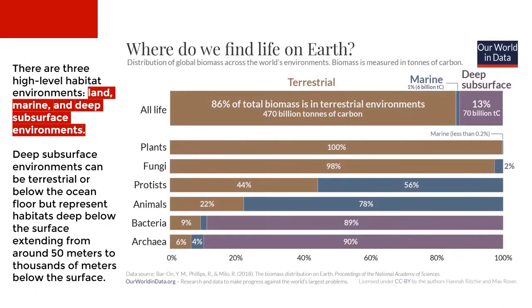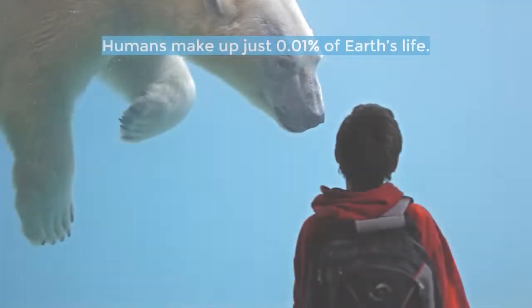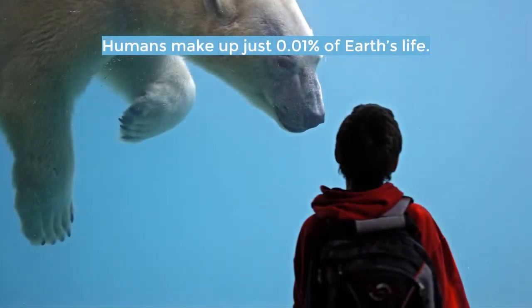There are three high-level habitat environments: land, marine, and deep subsurface environments. There is 86 percent of total biomass in terrestrial environments, followed by deep subsurface at 13 percent, and marine at 1 percent. Deep subsurface environments can be terrestrial or below the ocean floor, representing habitats extending from around 50 meters to thousands of meters below the surface. Did you know? Humans make up just 0.01 percent of Earth's life.